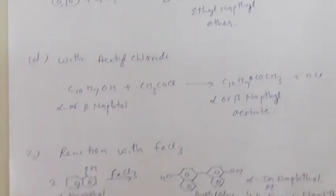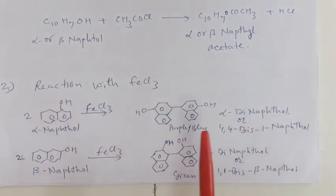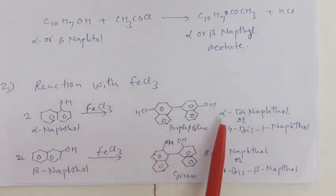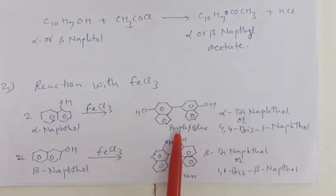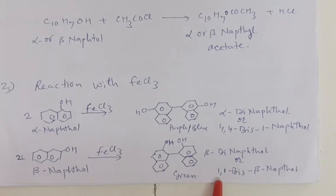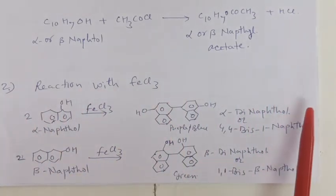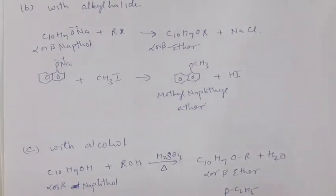If alpha or beta naphthol reacts with FeCl₃, then we get the dimer, that is alpha dinaphthol or 4,4-bis-1-naphthol. The dimer formed is of purple or blue color. If we take beta naphthol with FeCl₃ we get beta dinaphthol or 1,1-bis-beta-naphthol, which is of green color. This is a functional group test for alpha or beta naphthol, which comes from the phenolic group.